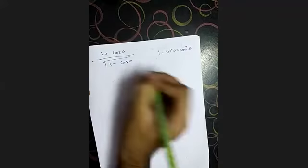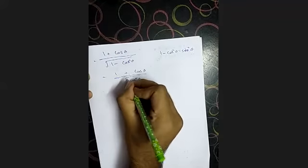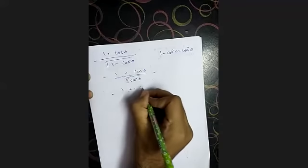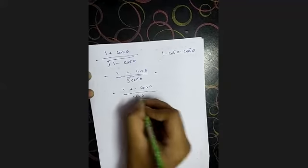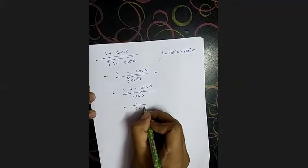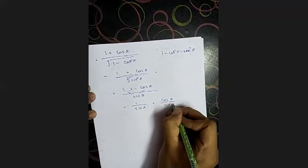What is 1 minus cos squared theta? 1 minus cos squared theta equals sin squared theta, because sin squared theta plus cos squared theta equals 1. So instead of 1 minus cos squared theta, I'm going to write sin squared theta. This root and square will get cancelled, so what will be left is 1 plus cos theta by sin theta.